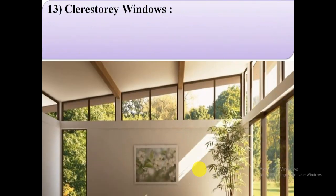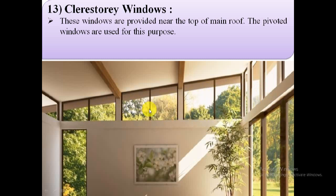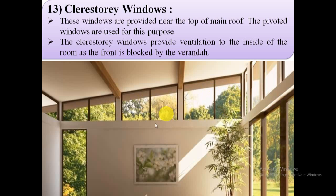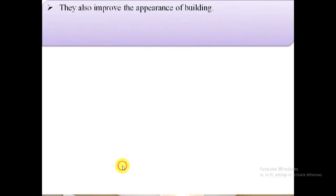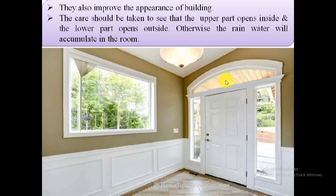The next type is clerestory windows. Clerestory windows are provided near the top of the main roof; pivoted windows are used for this purpose. Clerestory windows provide ventilation to the inside of the room when the front is blocked by a veranda, and they also improve the appearance of the building. Care should be taken so that the upper part opens inside and the lower part opens outside; otherwise rainwater will accumulate in the room.